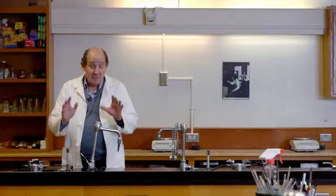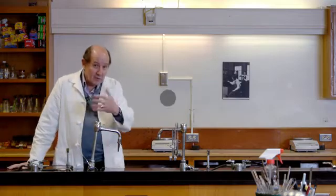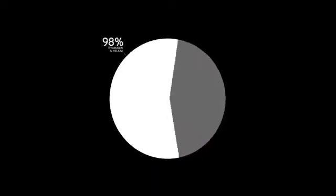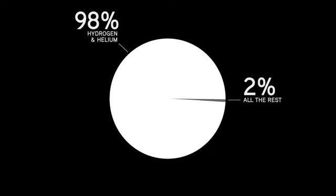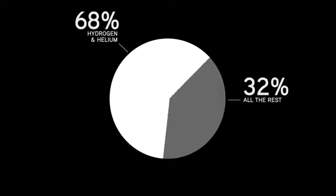But before we describe how the Earth and the other planets of the solar system were created, there's a little problem we have to take up. You'll remember from the last unit, we saw that all those new elements that were created made up only 2% of all the atoms in the universe.